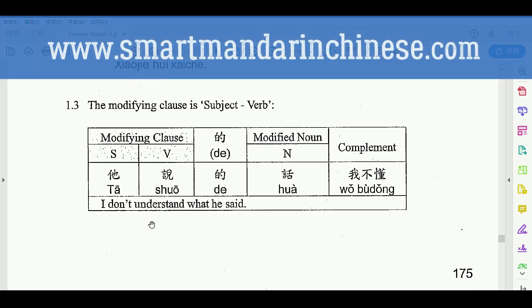Listen, I'm going to teach you something quickly. This is the structure to say 'I don't understand what he said.' So how do you say this in Mandarin? I don't understand what he said. So the whole sentence would be: 她说的话我不懂。